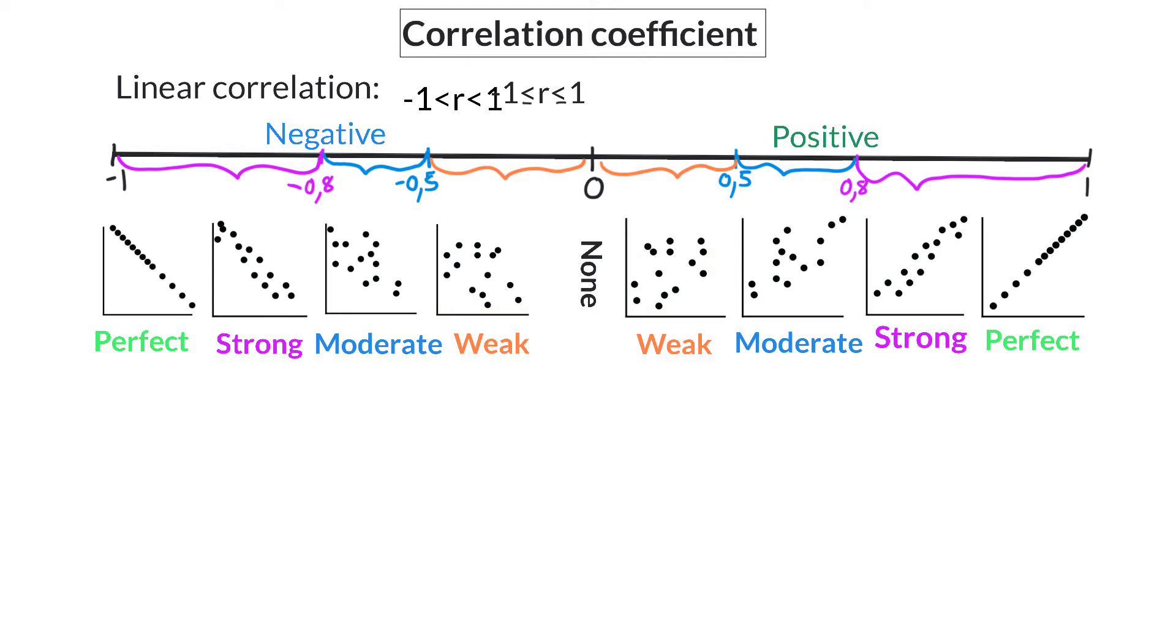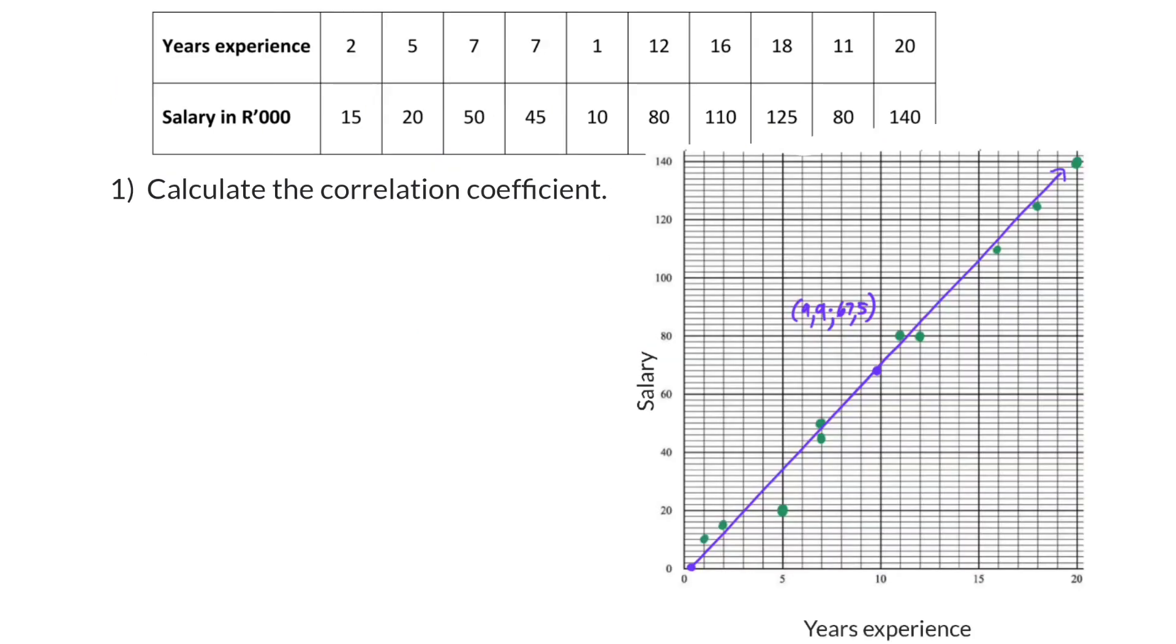This correlation coefficient is also determined using your calculator. In the previous lesson, we already had a look at this example, where we compared the years experience with the salary of people in the same company. When we drew the line of best fit, it was already clear that most of the coordinates lie quite close to this regression line.